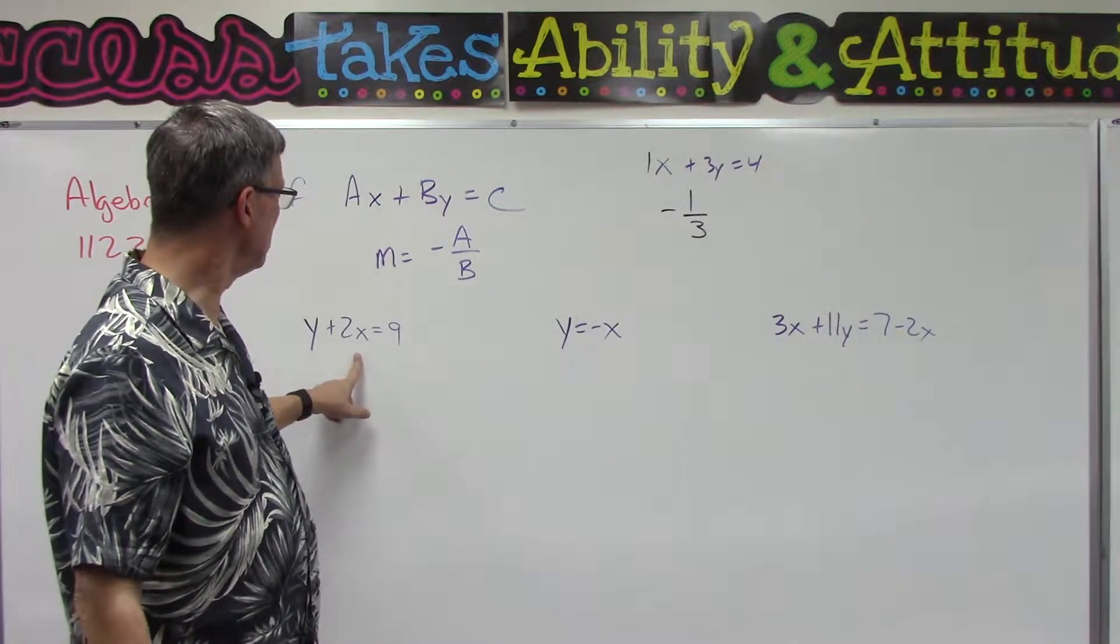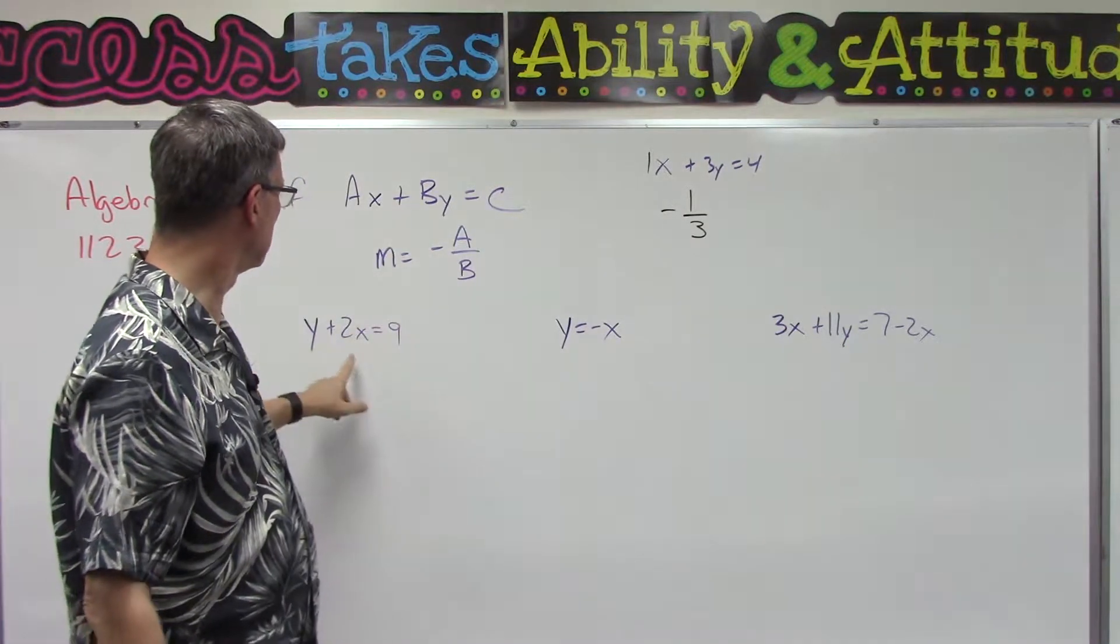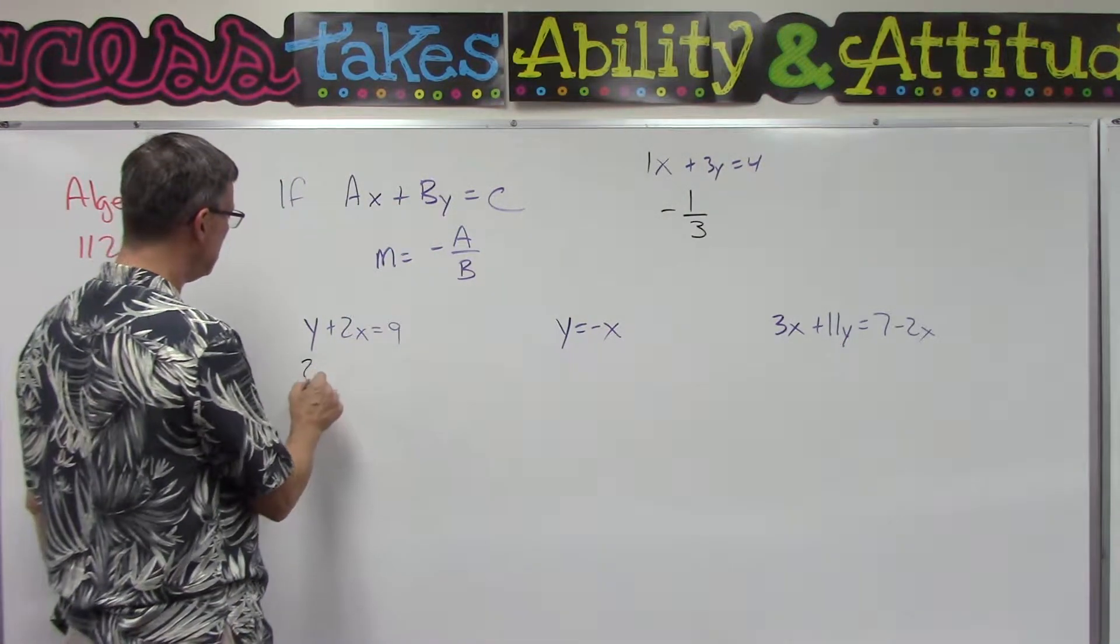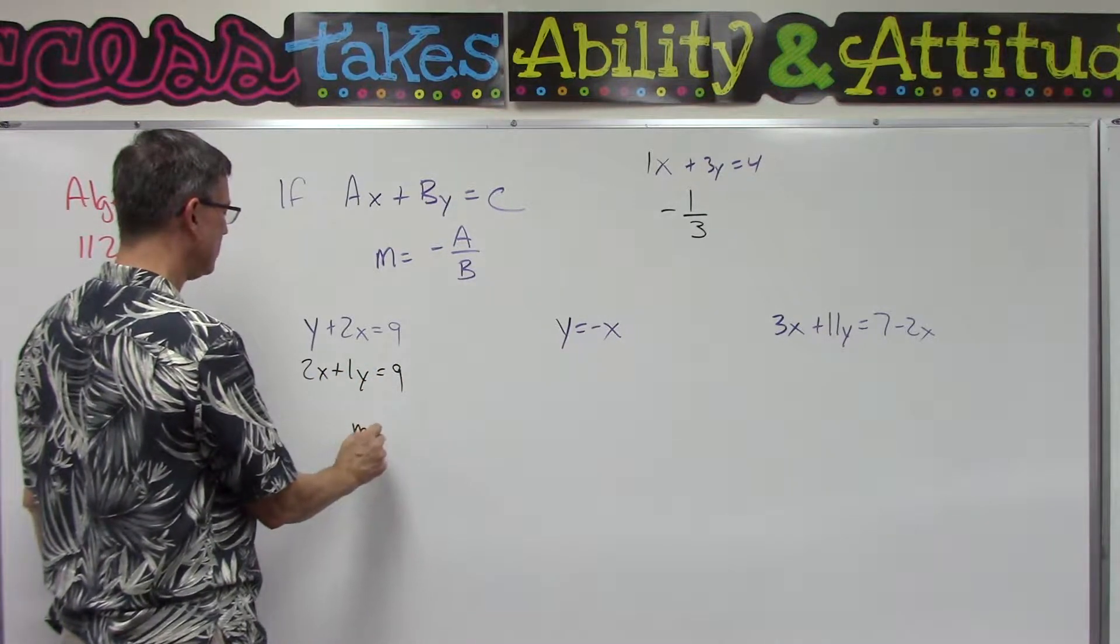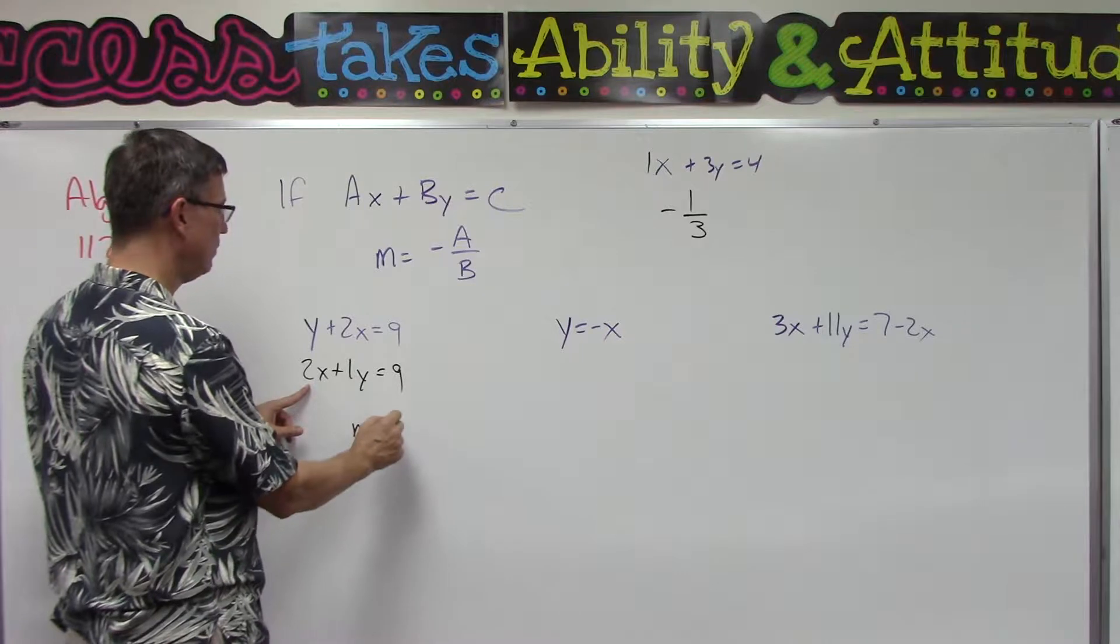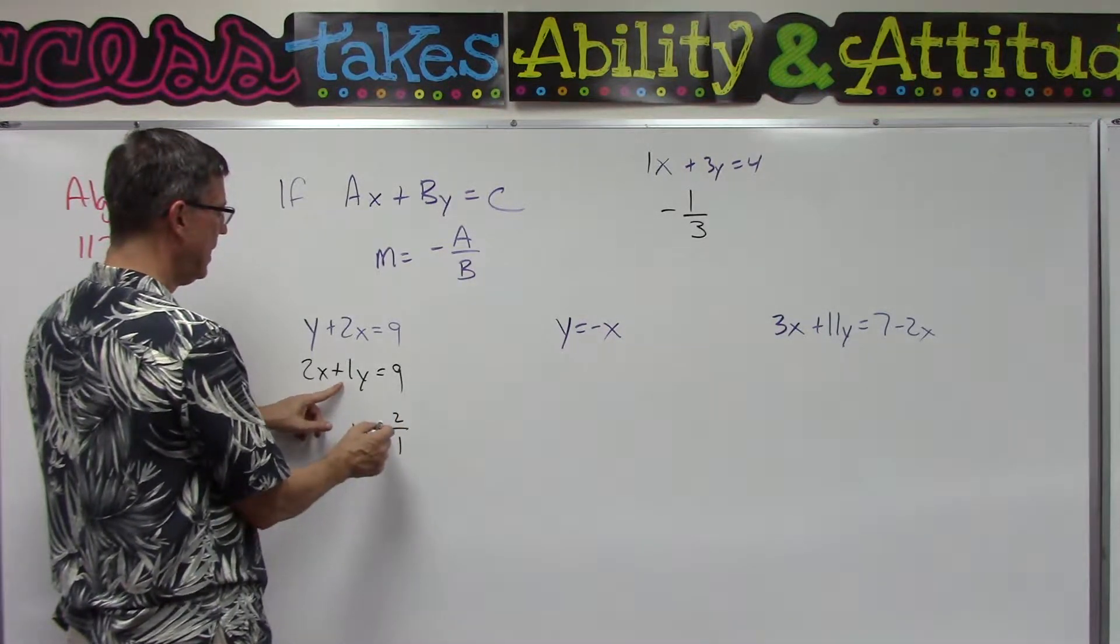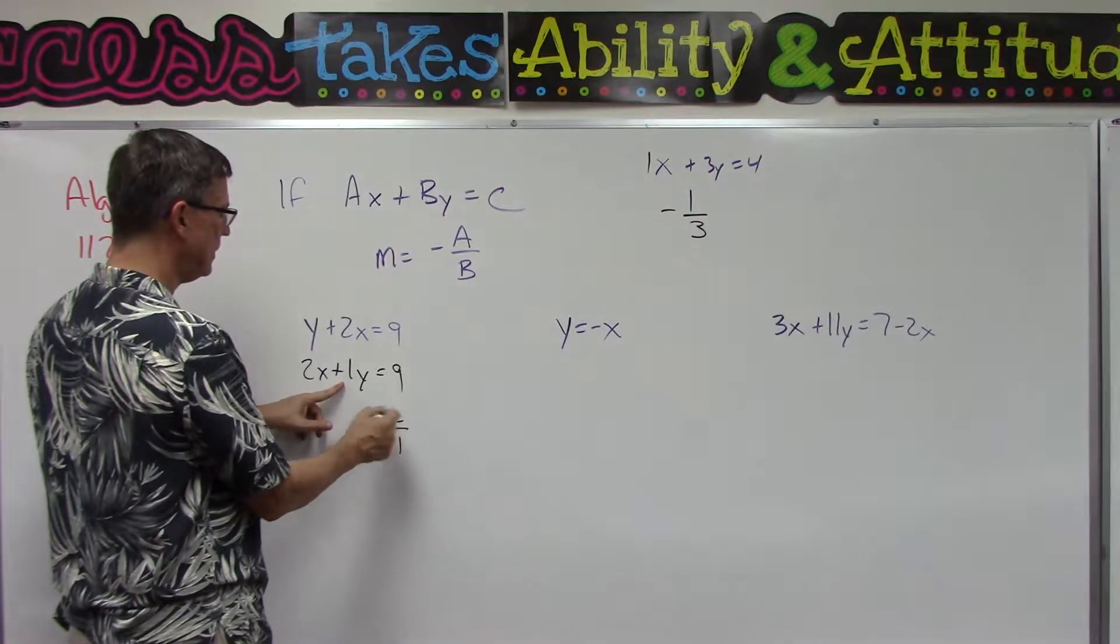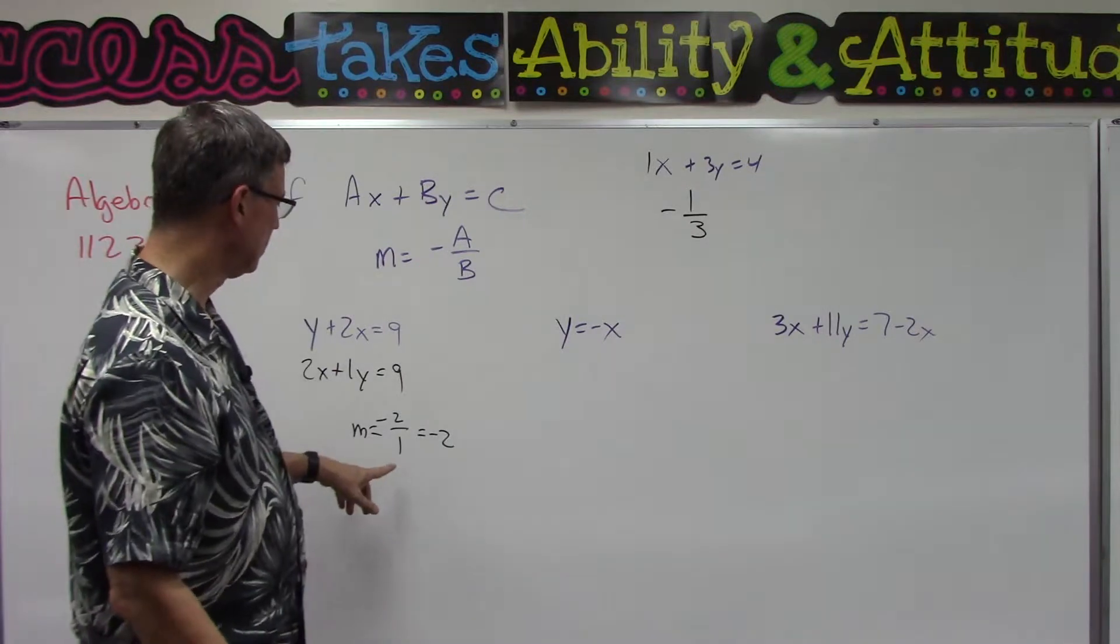This looks like it should be pretty easy, but notice I have to get it in this form first. So I really should rewrite this as 2x plus 1y equals 9. So now the slope is I take the x value, put that on top, put the y value on the bottom, and then it's the opposite of that.